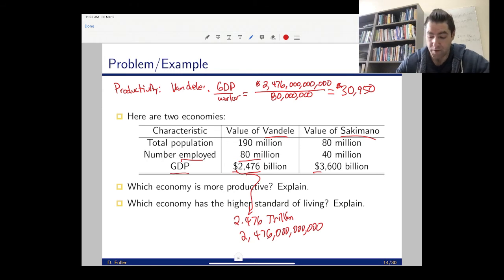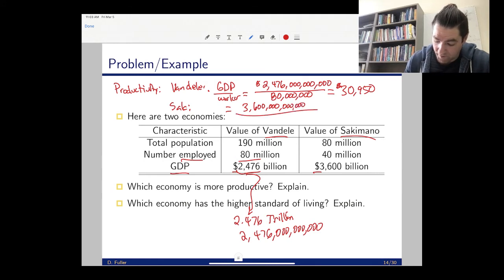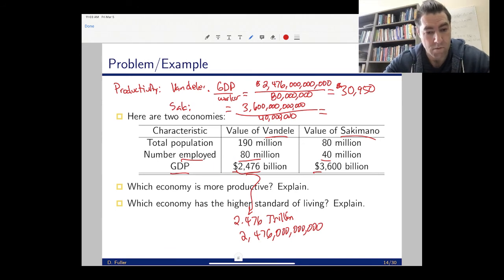We could do a similar calculation for Sacamano. GDP per worker is 3.6 trillion basically, divided by their number of workers, which is 40 million, and we get 90,000. Yeah, 90,000 would be the answer - we probably didn't need the calculator for that one. Based on that, GDP per worker, we see that workers are more productive in Sacamano than they are in Vandelay. Each worker on average makes $90,000 worth of GDP in Sacamano compared to $30,000 in Vandelay.